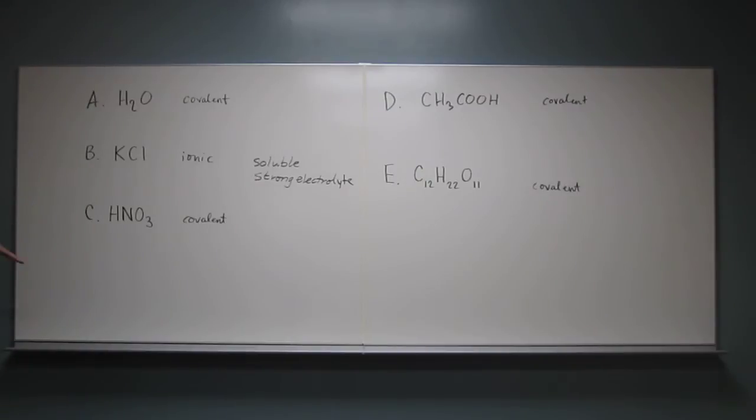So unfortunately the other ones are covalent. So we have to, when we're thinking about covalent, we're trying to identify do we have electrolytes. The ones that we're looking for are acids or bases. Those are the ones that are going to be electrolytes or non-electrolytes, or strong electrolytes or weak electrolytes.